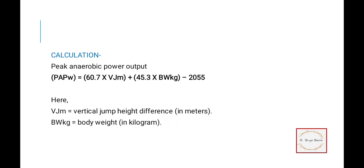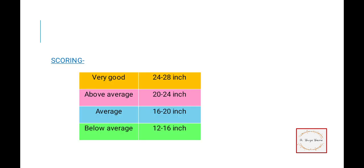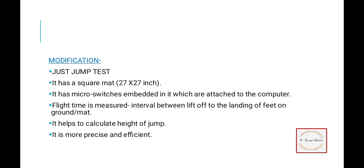For scoring, very good is 24 to 28 inches and below average is 12 to 16 inches.